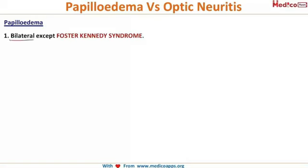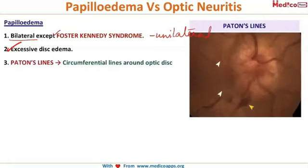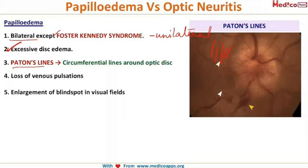Papilledema is always bilateral, except in Foster Kennedy syndrome where it is unilateral. Compared to optic neuritis, the level of disc edema in papilledema is much higher. A striking feature is Paton's lines — circumferential lines around the optic disc, visible in the image — which are characteristic of papilledema and absent in optic neuritis. There is also loss of venous pulsations and enlargement of the blind spot on visual field testing.